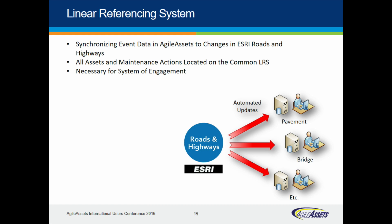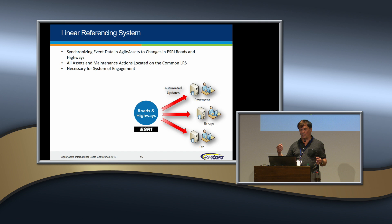This is particularly important as we begin to scratch the surface of system of engagement. For system of engagement, if you have everything on the LRS, the common thing is location. We're road people — we like maps. You want to look at a corridor, a county, a region to be able to put all those assets on a map and then drill into the tabular data behind it. Everything needs to be on that common LRS to do that.